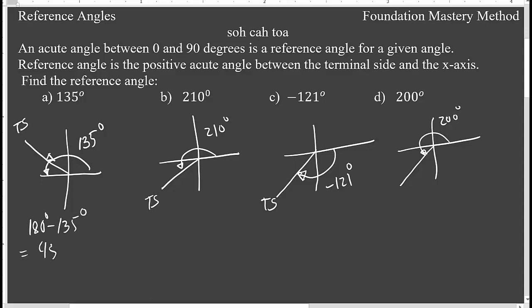For 135 degrees: the whole is 180 minus 135, so we get 45 degrees — that's the reference angle. Now for 210 degrees, my reference angle is in the positive direction, and you get 210 minus 180, which gives you 30 degrees.